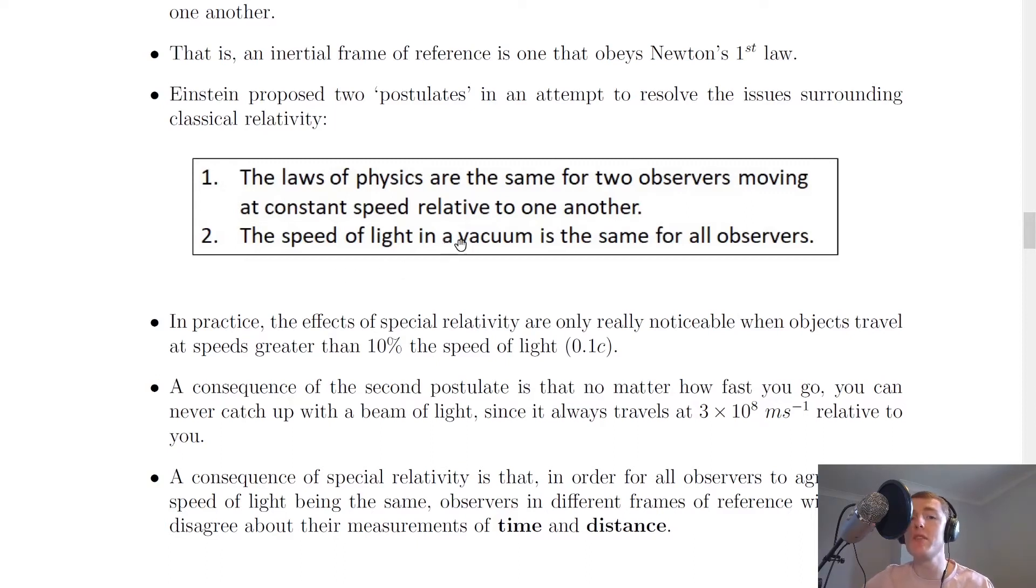And number two says that the speed of light in a vacuum is the same for all observers, i.e. nothing can travel faster than the speed of light. And that's a given rule that we need to remember.